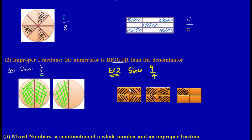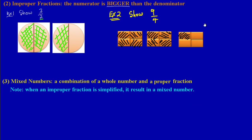That's our second type of fraction — the improper fraction. The third basic type is called mixed numbers. Students sometimes say 'mixed fractions' but the correct term is mixed numbers. A mixed number is a combination of a whole number and a proper fraction. It's very important to make a connection between improper fractions and mixed numbers.